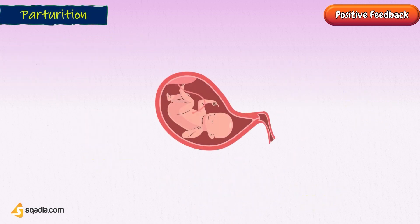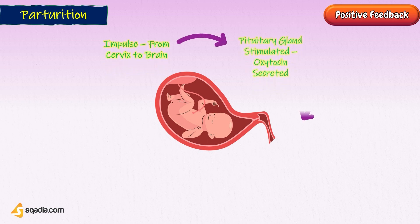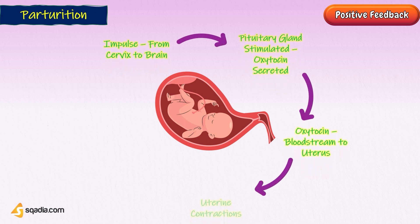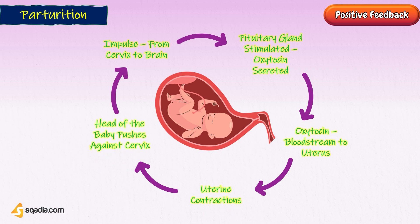Another example of a positive feedback loop is the one that controls childbirth. The process normally begins when the head of the infant pushes against the cervix. This stimulates nerve impulses, which travel from the cervix to the hypothalamus in the brain. In response, the hypothalamus sends the hormone oxytocin to the pituitary gland, which secretes it into the bloodstream so it can be carried to the uterus. Oxytocin stimulates uterine contractions, which push the baby harder against the cervix.